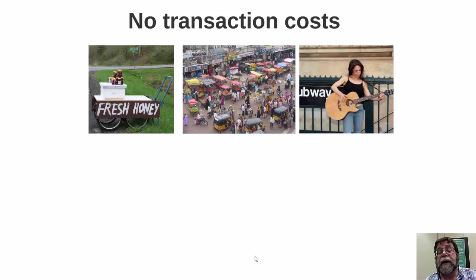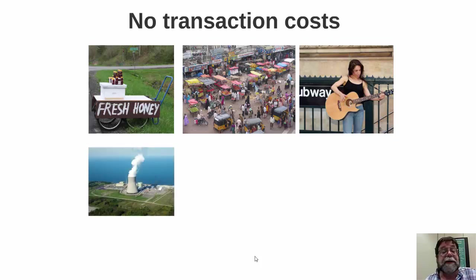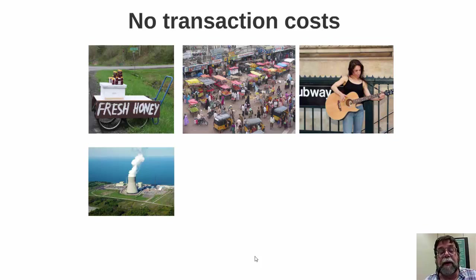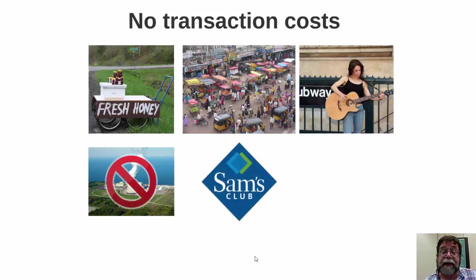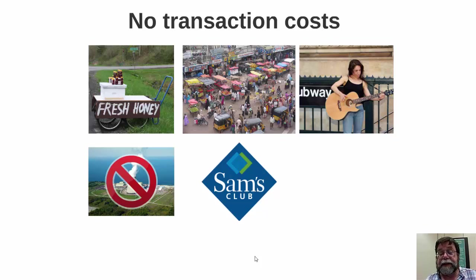On the other hand, there are significant transaction costs in many markets. For example, if you wanted to build a nuclear power plant, you'd be spending several hundreds of millions of dollars, such as the cost to construct the 9 Mile 1 nuclear power plant in Oswego. Similarly, if you want to shop at Sam's Club, BJ's, or Costco, you have to pay an annual membership fee, which serves as a cost of engaging in their transactions.